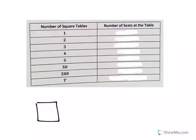So I know I have a square table. One person can sit here, one can sit here, one can sit here, one can sit here. So four total. If you have one table, how many seats? The number of seats at the table. How many seats are at the table? We have one, two, three, four. Four seats.